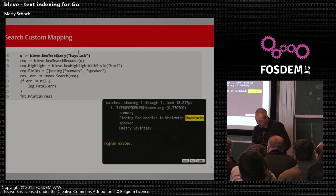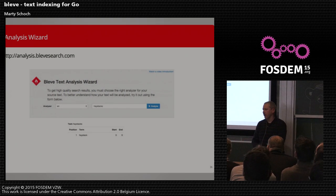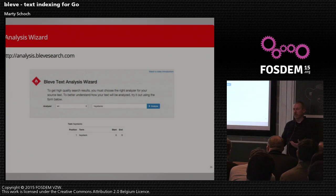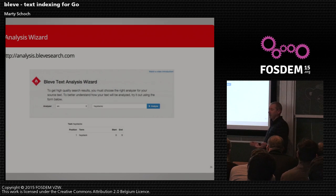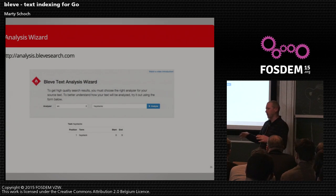We wanted Bleve to be Go-gettable, so we tried to have as much pure Go as possible for that great out-of-the-box experience. But we do have existing C extensions for some functionality we don't have in Go yet. So we'd be open to optional add-ons for some of that capability, but we probably wouldn't want it in the core for that reason.